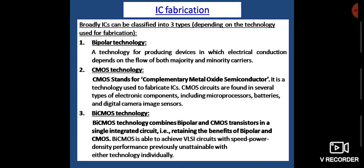In this slide, you can see that broadly, ICs can be classified into three different types depending on the technology used for fabrication. The first one is bipolar technology, the second one is CMOS technology, and the third one is bi-CMOS technology. Bipolar technology is a technology for producing devices in which electrical conduction depends on the flow of both types of carriers, that is majority and minority carriers.